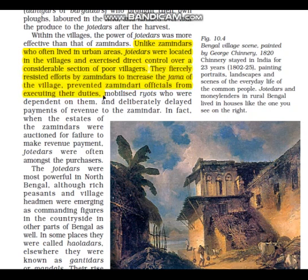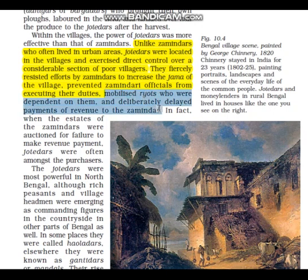The third sub-point is 'Mobilized Routes.' Under it: 'They also mobilized groups of people who were dependent upon them and deliberately delayed the payments of revenue to the Zamindars.'